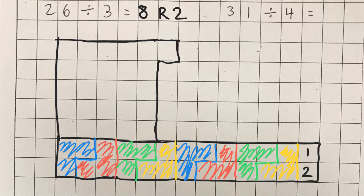So 26 divided by 3 gave me eight groups and I had a remainder of two, as you can see — my eight groups and the two that are remaining. I could have done the other shape the same way, just making groups of three. The shape doesn't matter as long as you divide it evenly.